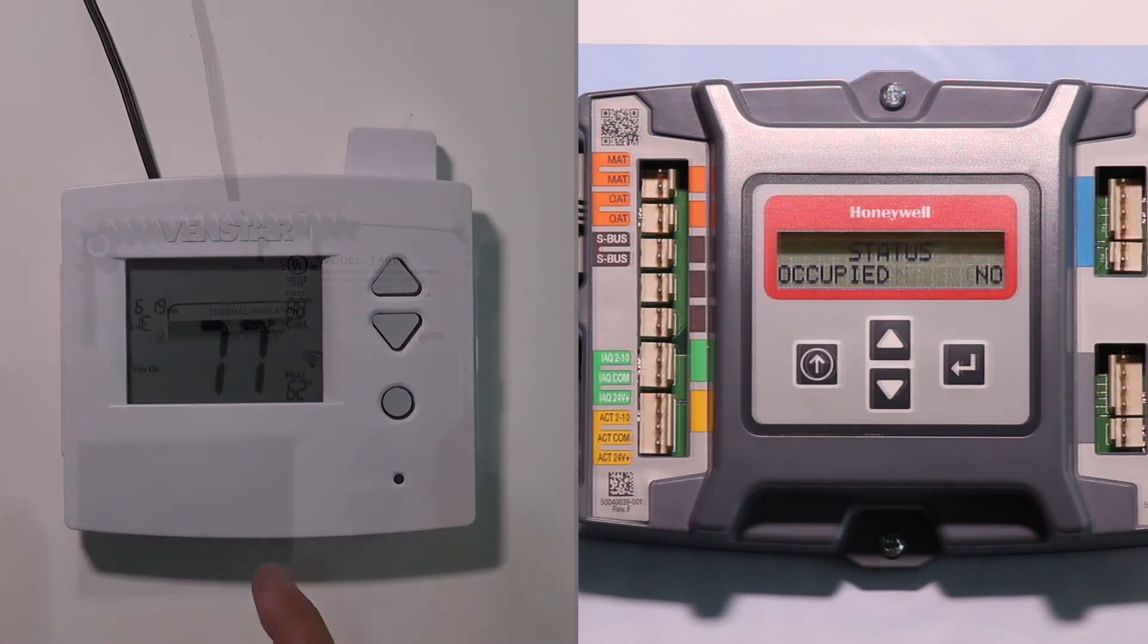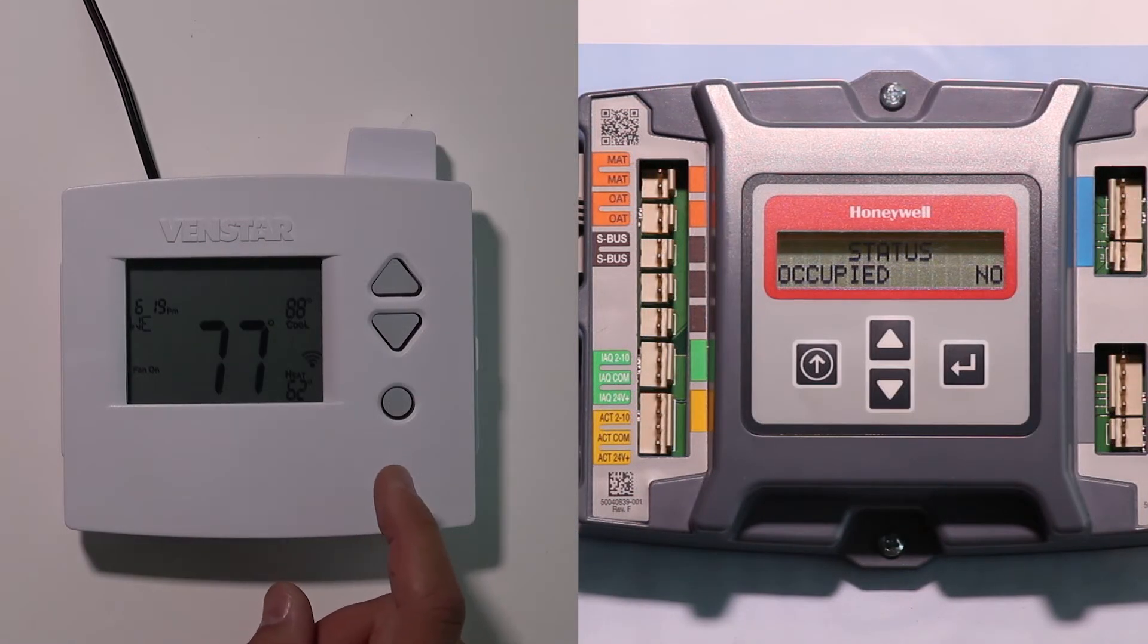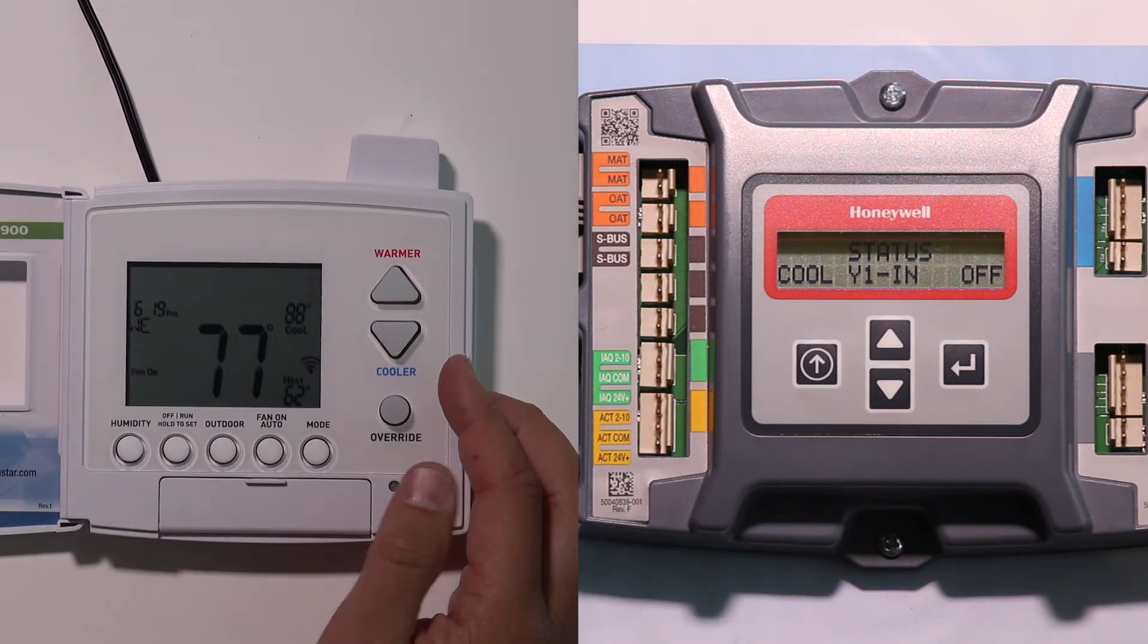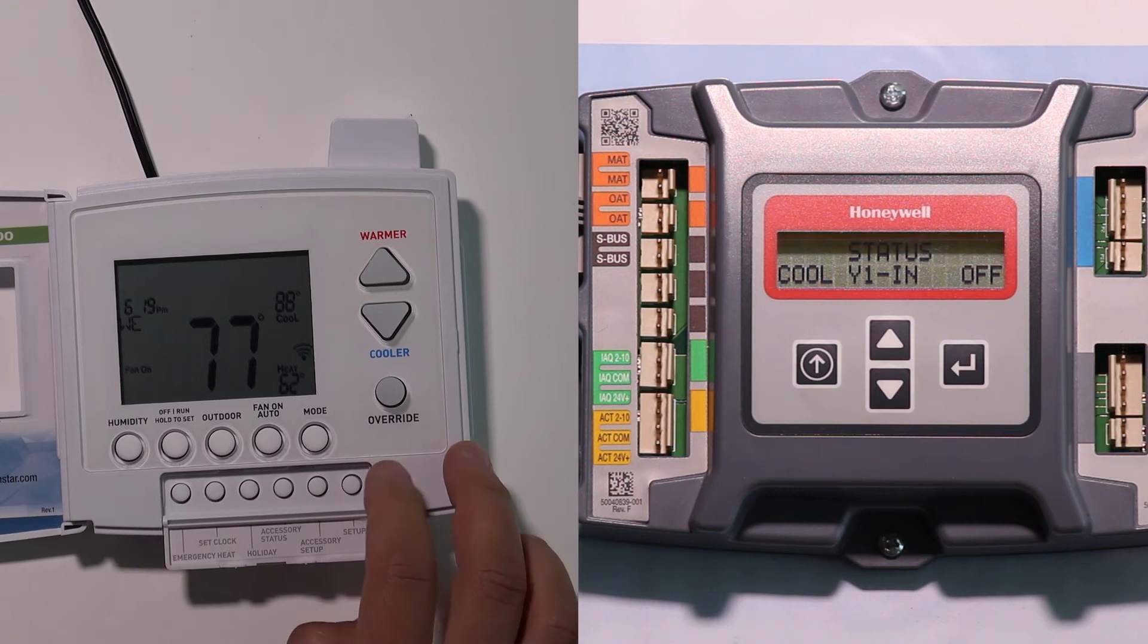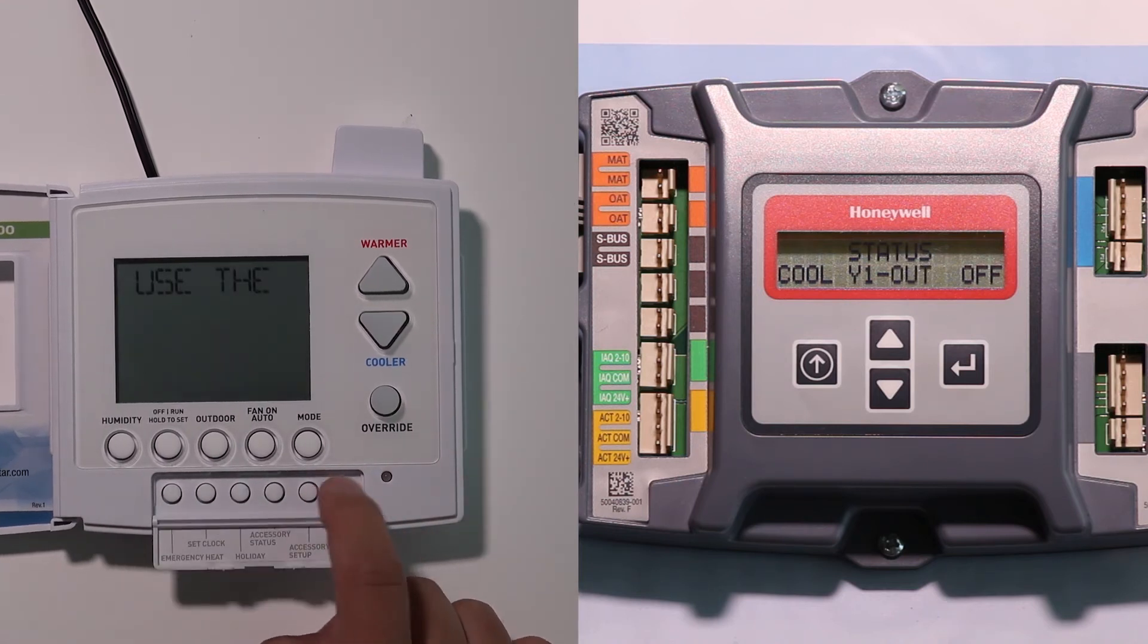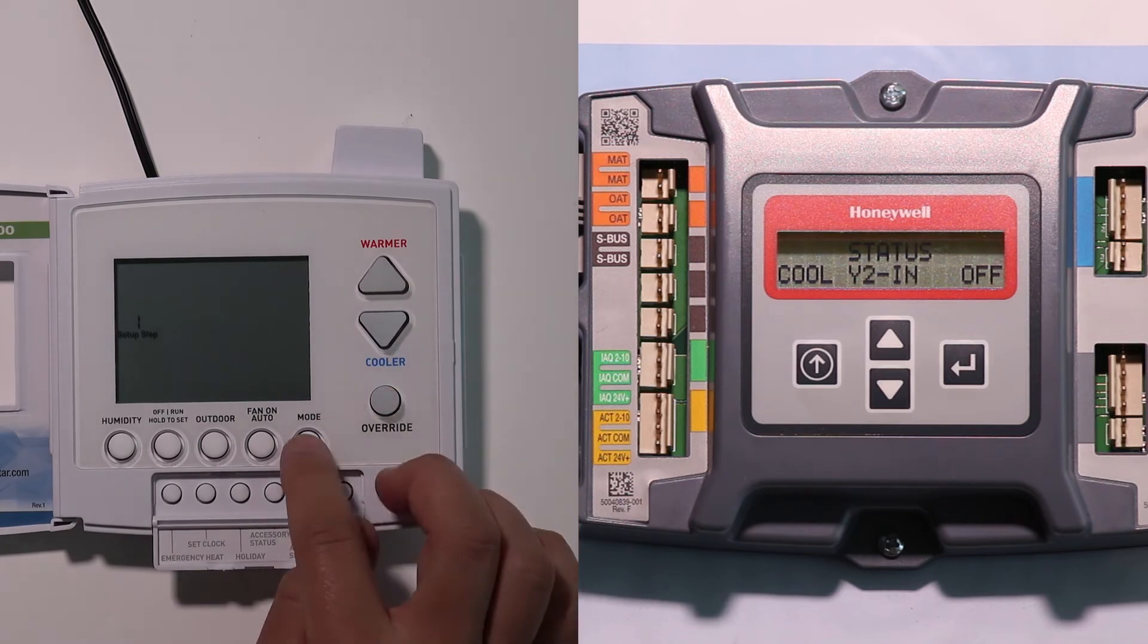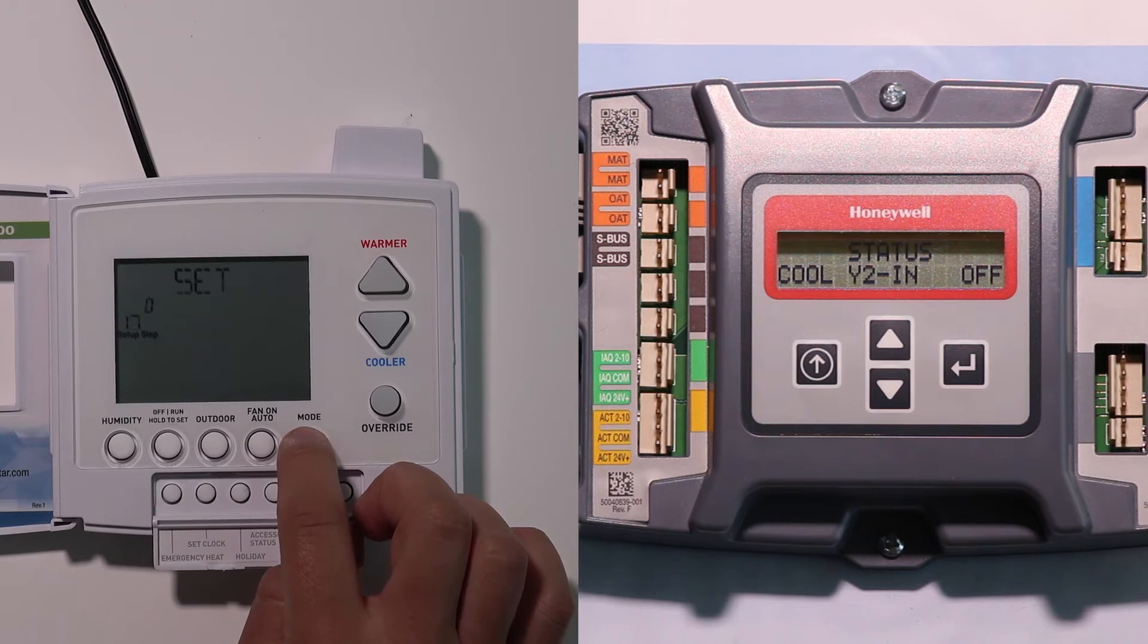Once we have these two components physically wired to each other, then we need to set them up to actually do what we need. So on the thermostat, we're going to go to the setup button under the little door down here. That tells us to use the up and down warmer buttons, and we can use the mode button to toggle up to the settings that we need. There's two settings we're going to look at for the occupancy: one is setting 54 and 55.